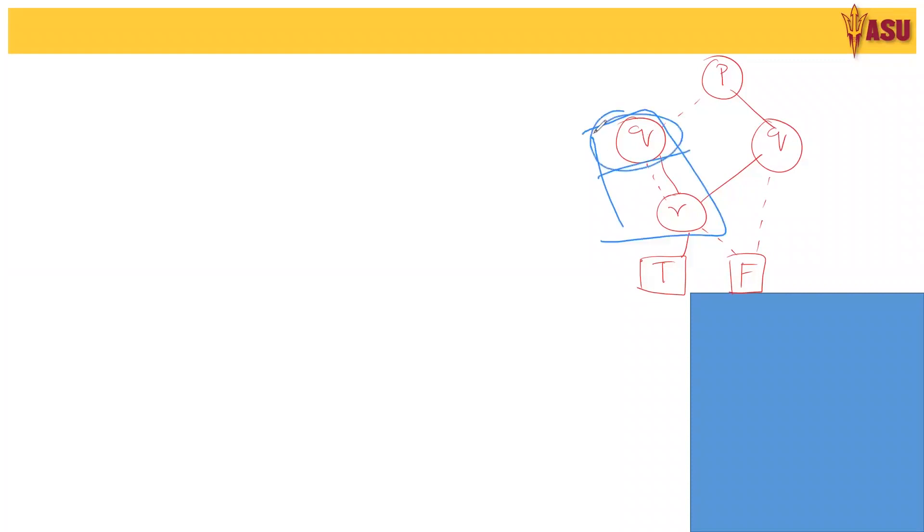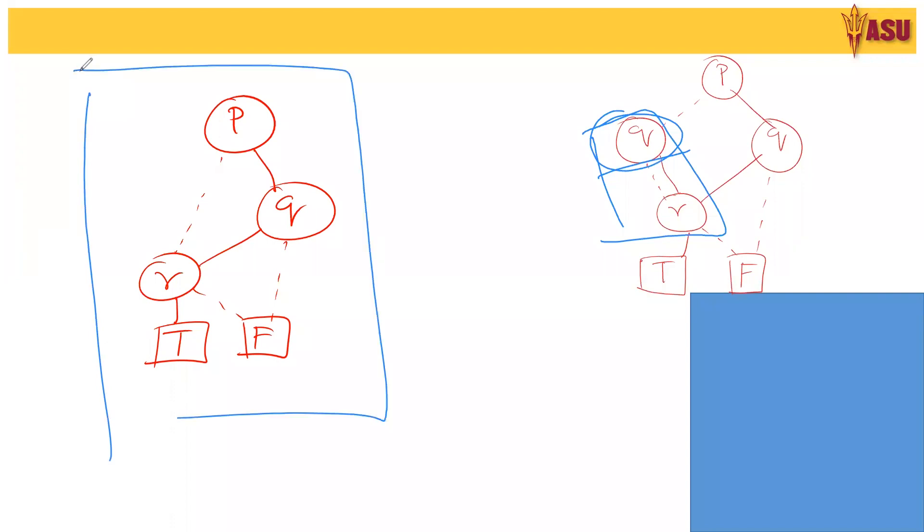We can remove this q over here. We can remove this q and connect p directly on false to r. So this gives rise to p, q, r, on true goes to q, on false goes to r and the rest of it remains. So this is our final reduced ordered binary decision diagram.